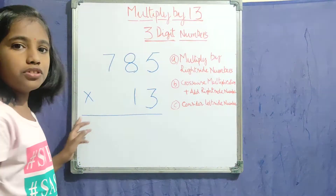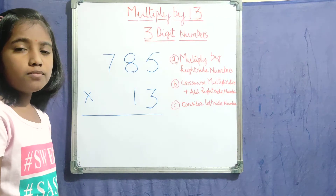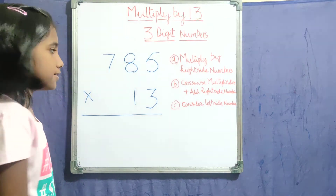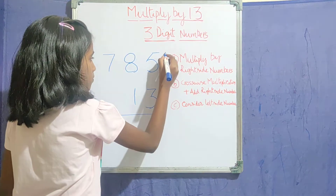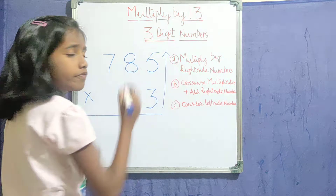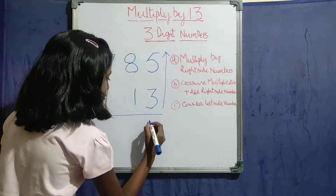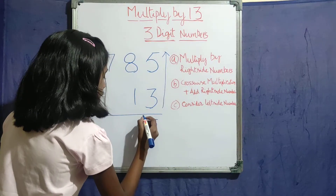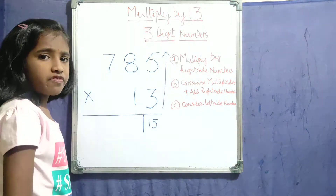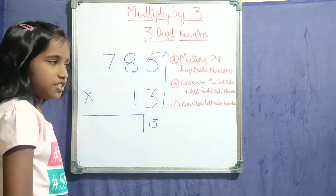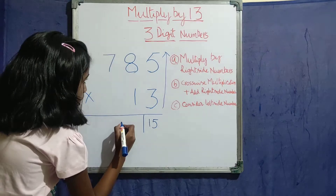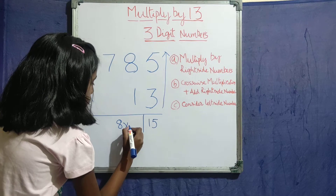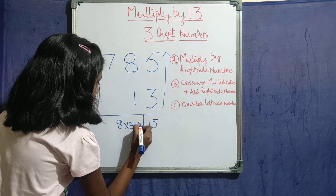Let's take the example 785 into 13. First we have to multiply the right side numbers. 5 into 3 is 15. Next we have to do crosswise multiplication — 8 into 3 plus 5.